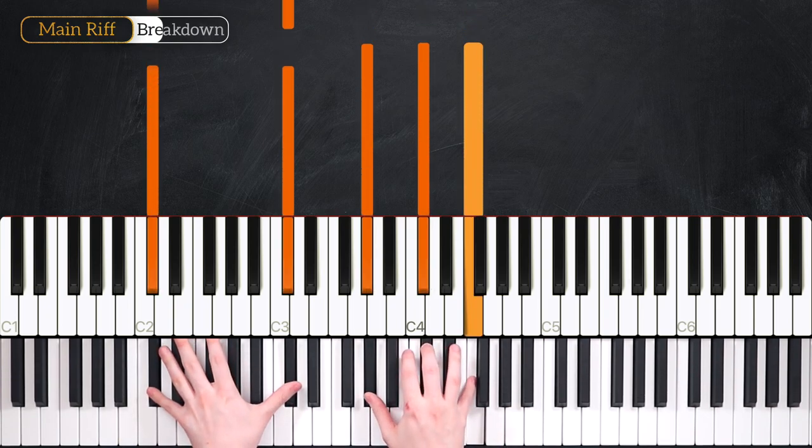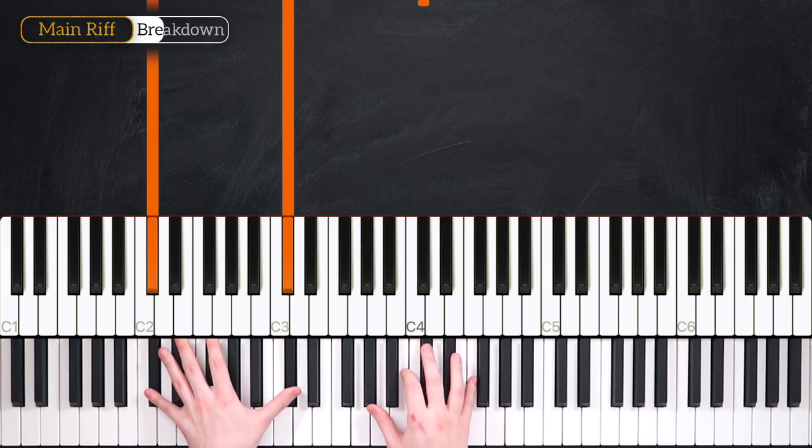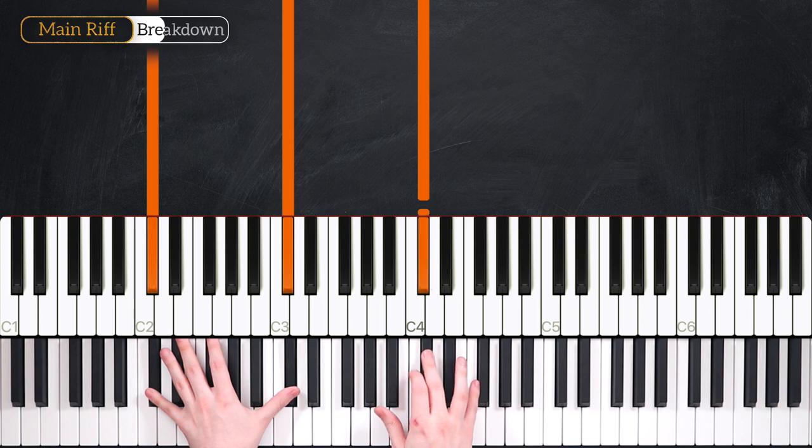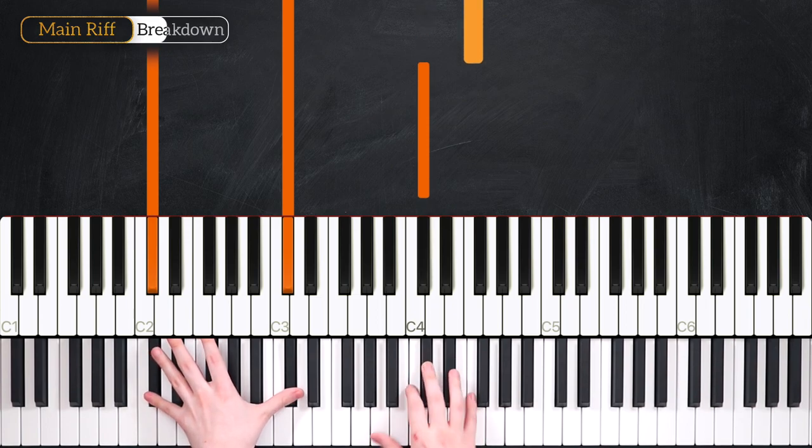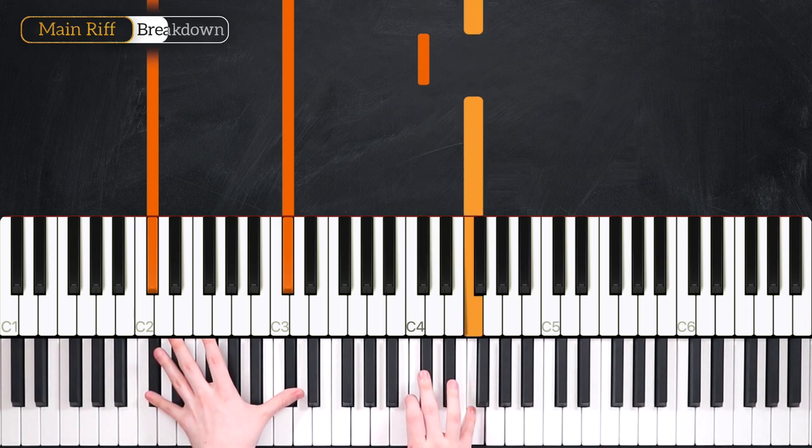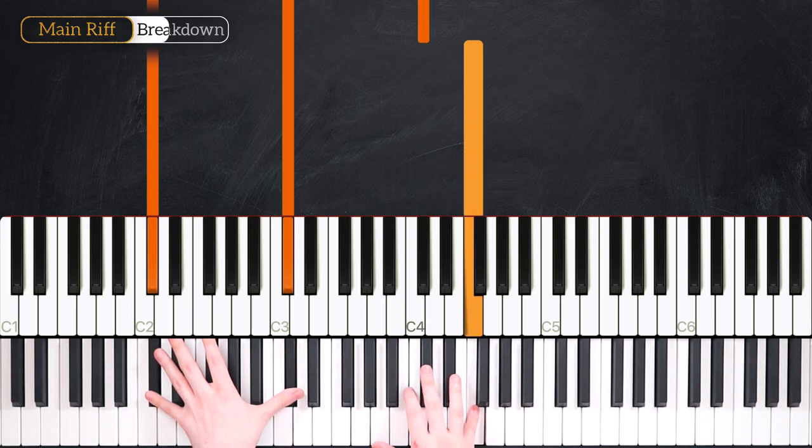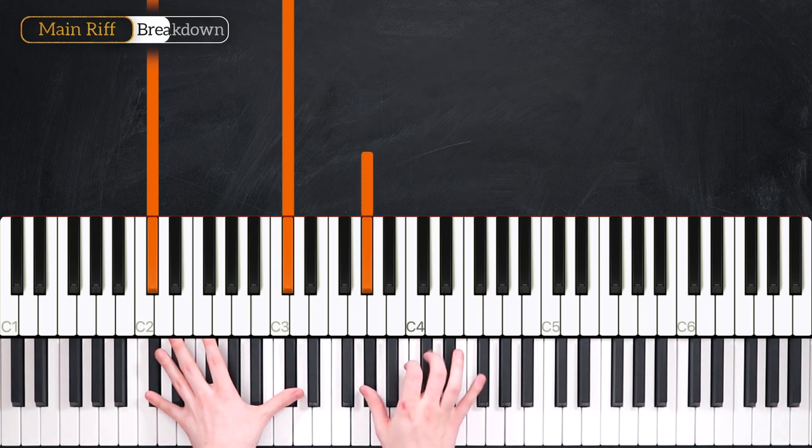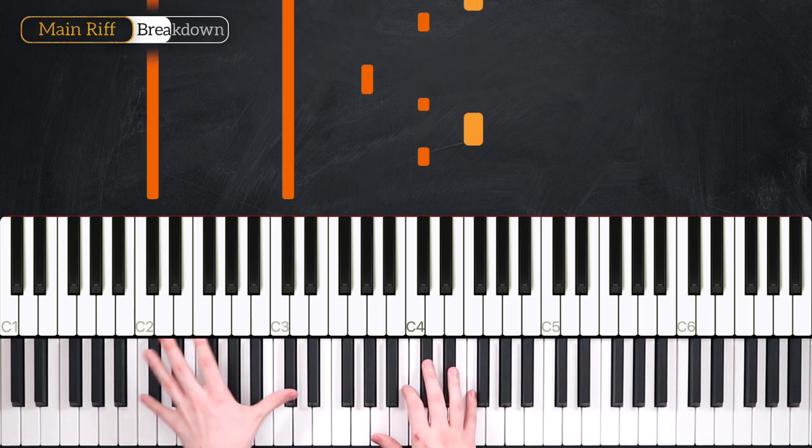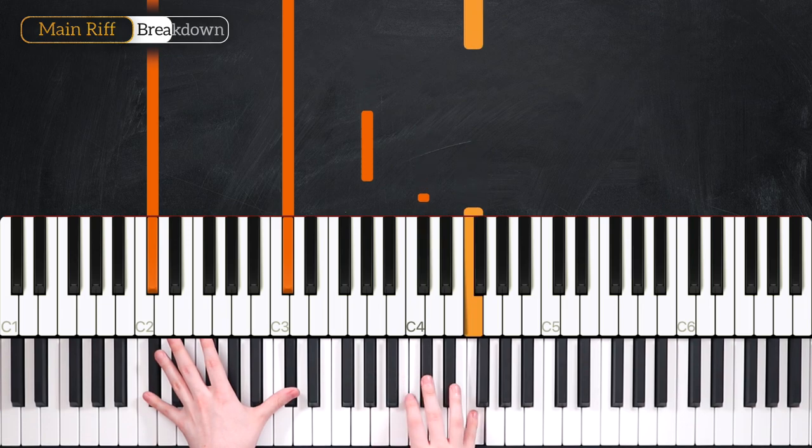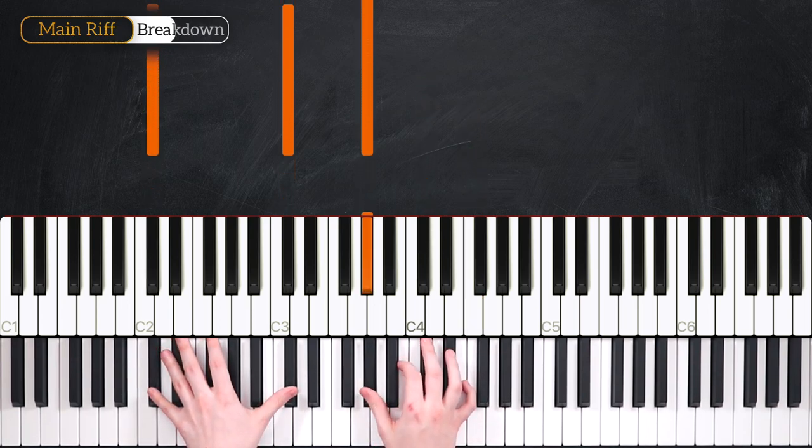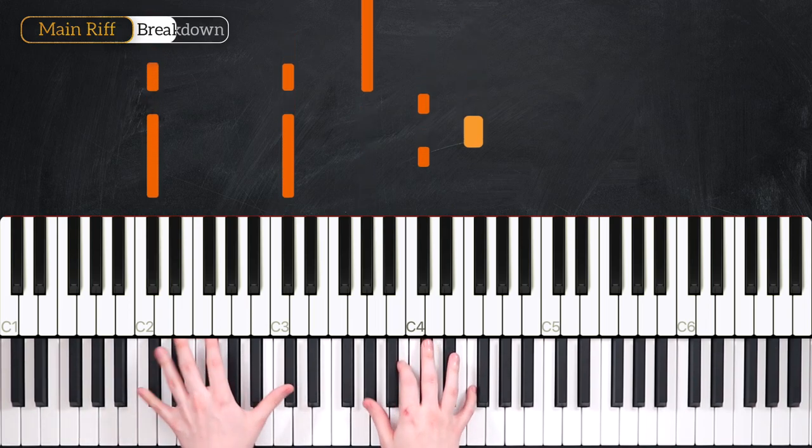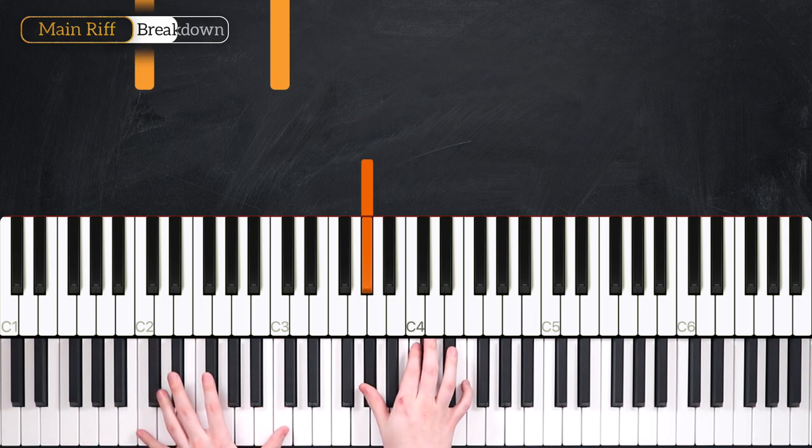Our first bar, we're going to be using our Db major chord. Octave Db's in the left hand, and we're going to start on our Db with our middle finger. We're going to go 1, E, and A. Alright, from Db to F, and then we're going to rock back down Db, Ab. So we're going to think in that rhythm, holding that F for twice as long as the other notes. And as we get down to this Ab here, we're going to play our Db in the left hand again.